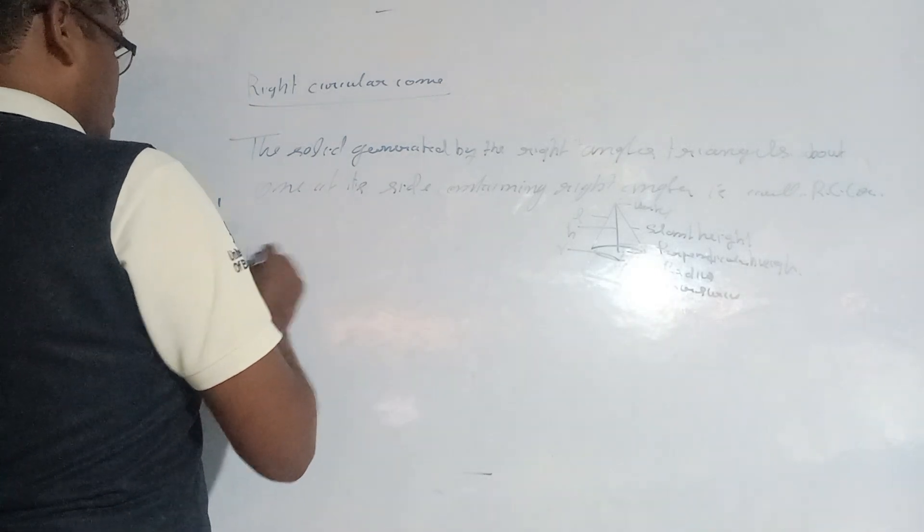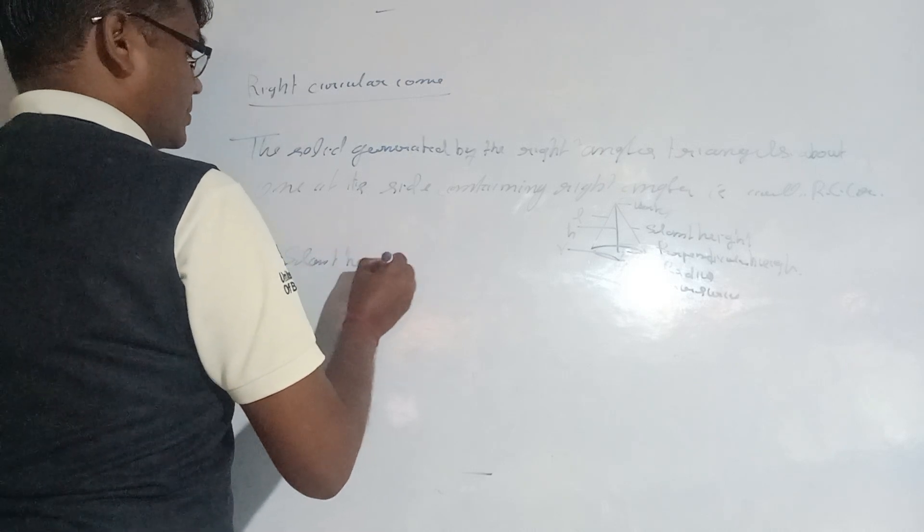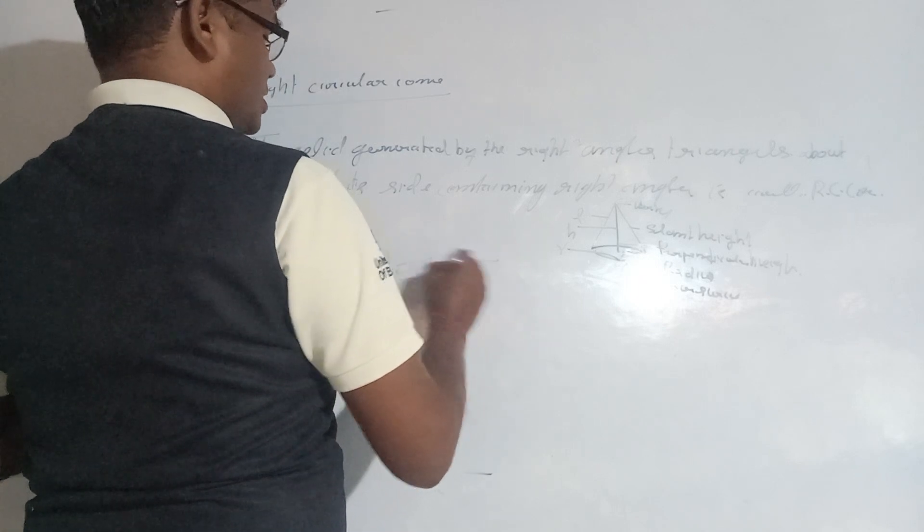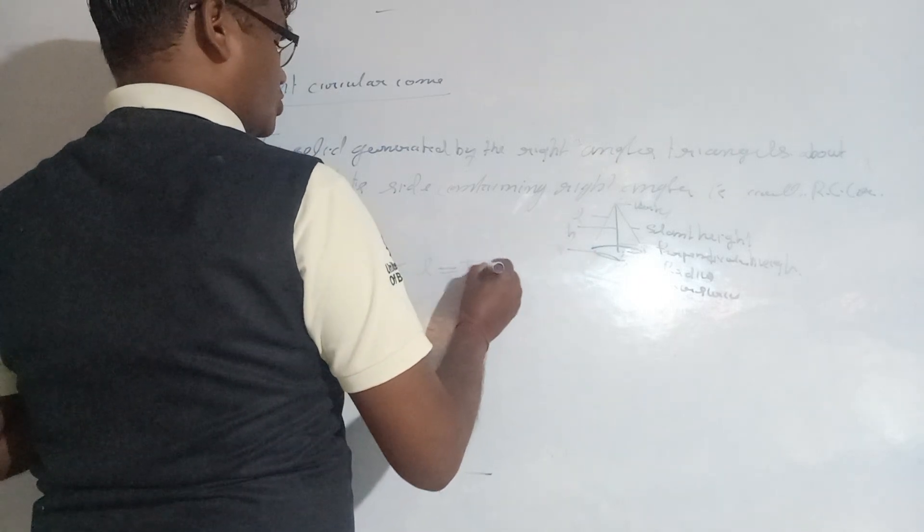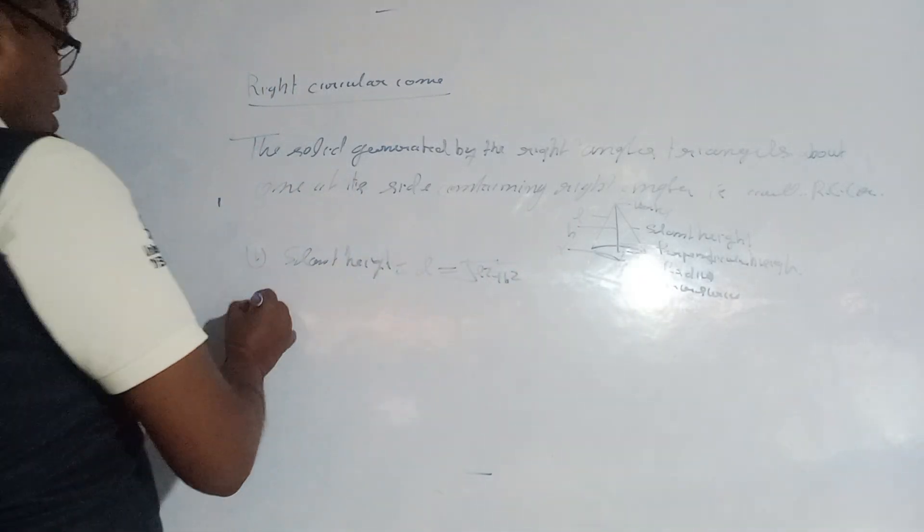First, let's find the formula for slant height. Using the Pythagorean theorem, we can calculate it: L equals the square root of h² plus r².